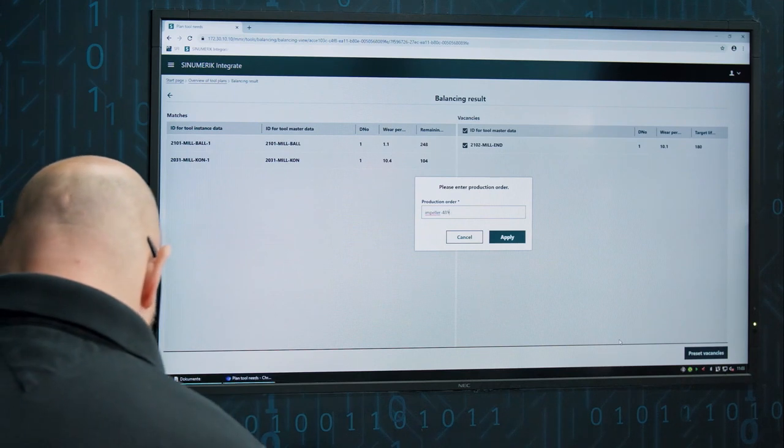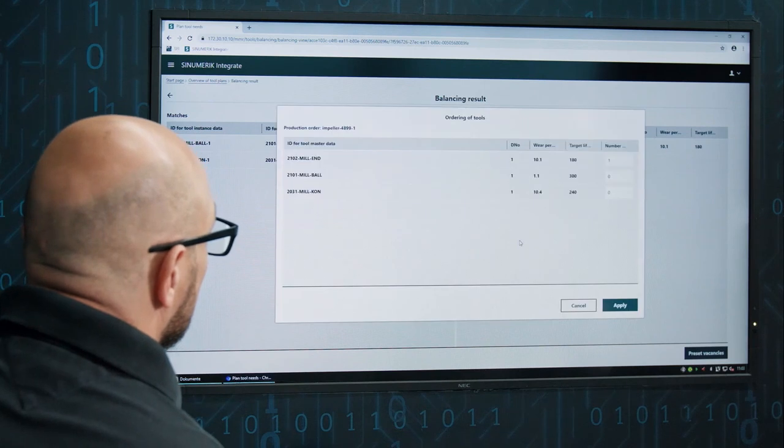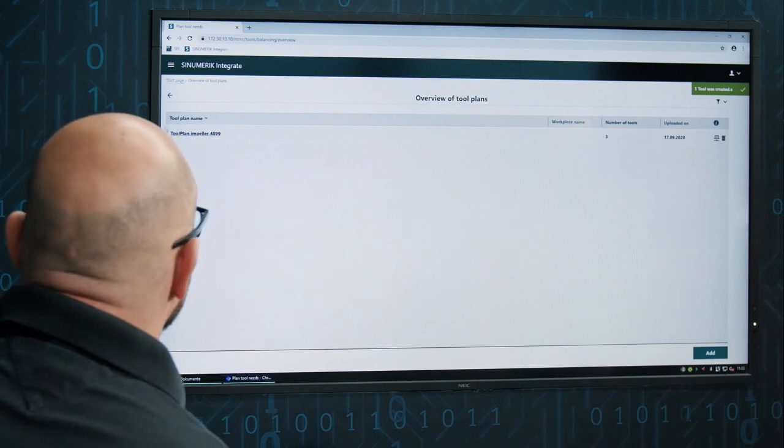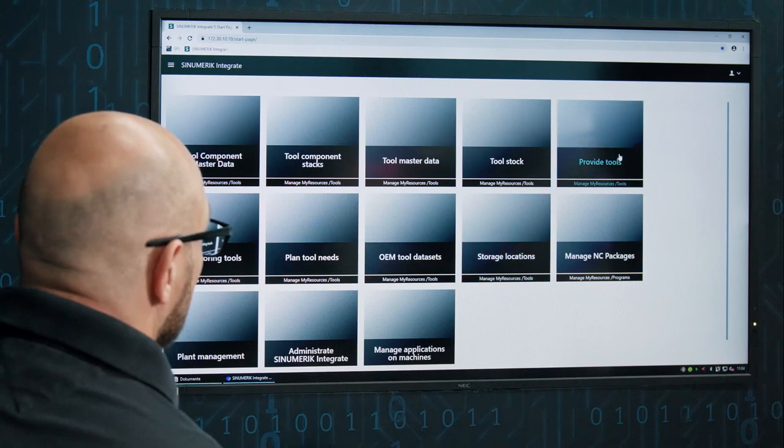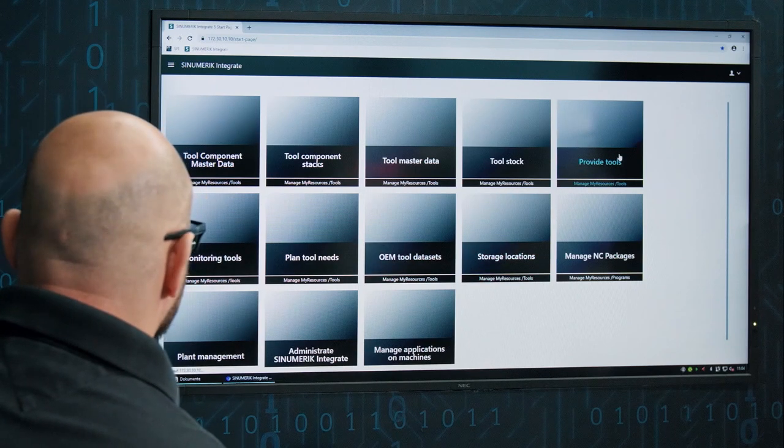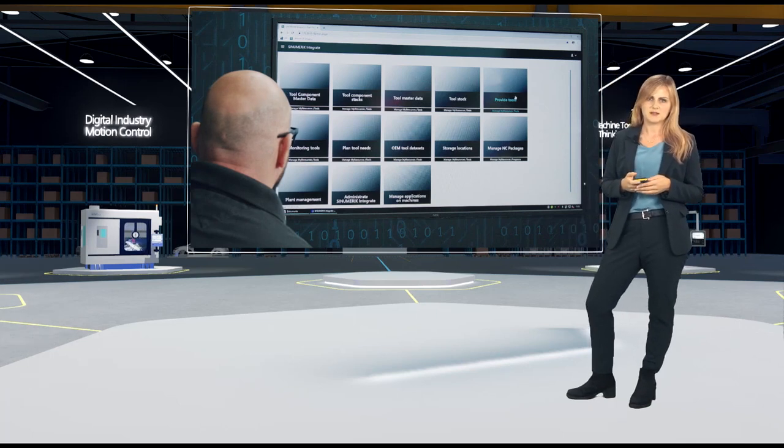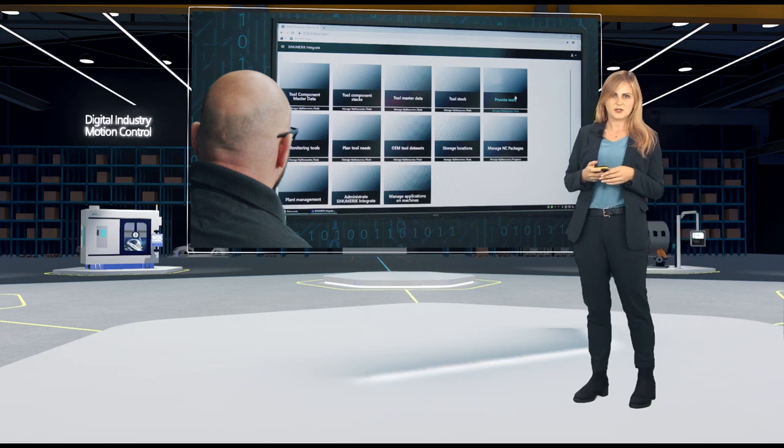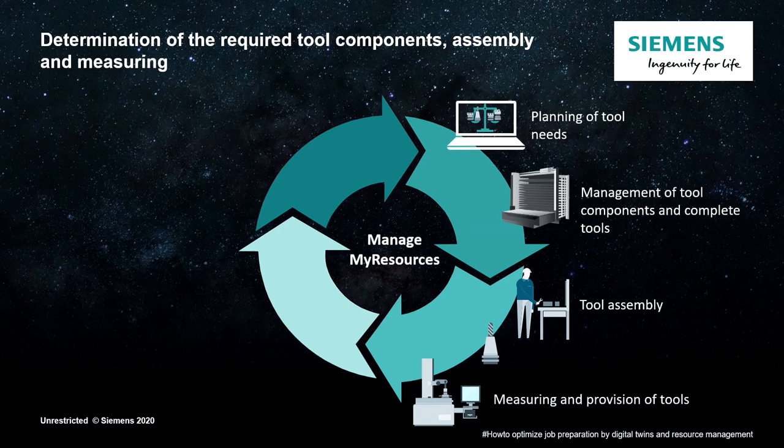Therefore, the use of ManageMyResources allows a reduction of tool buffers through this just-in-time logistics. The automated process massively reduces the manual effort for determining the required tools. And also, the search times and walking distances of employees are minimized. And finally, the machine operator's questions about where he can get the required tools are answered.